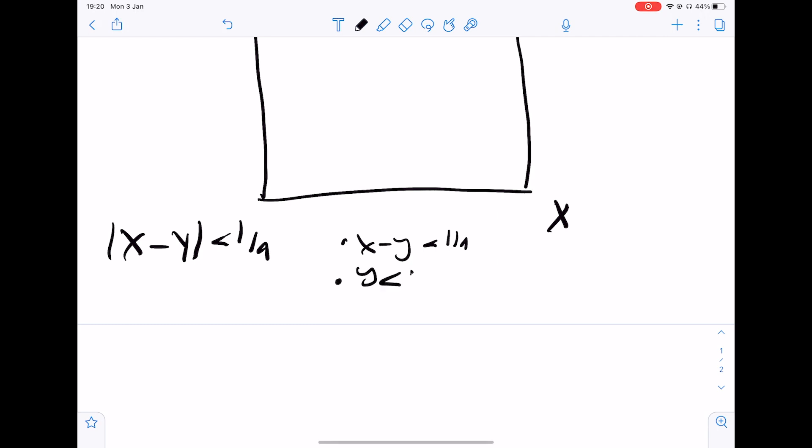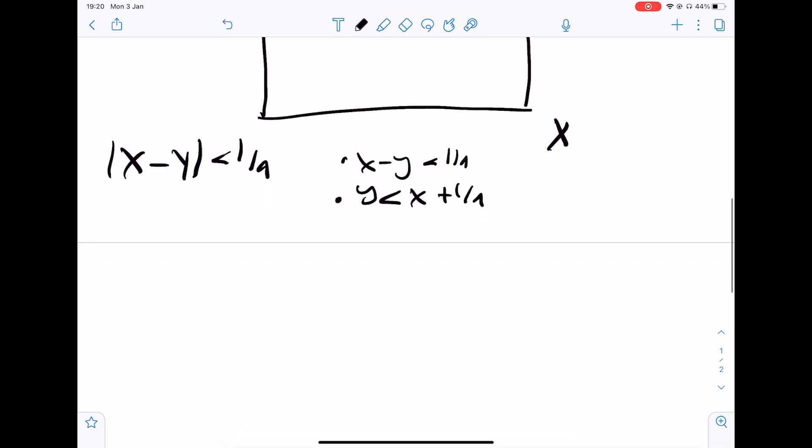So y is less than x plus a quarter and then obviously the other is true. So we have y minus x is less than a quarter and so y is greater than x minus a quarter.